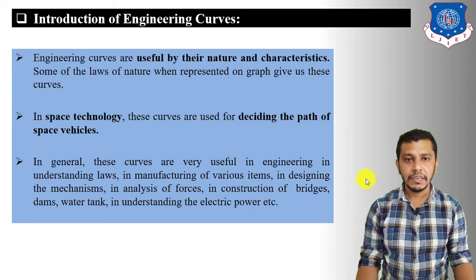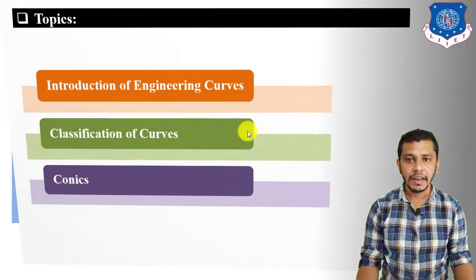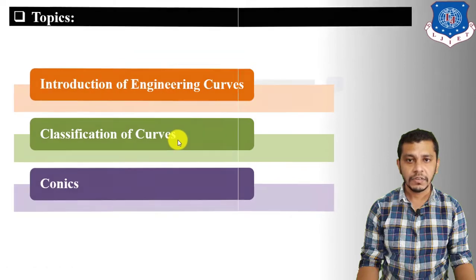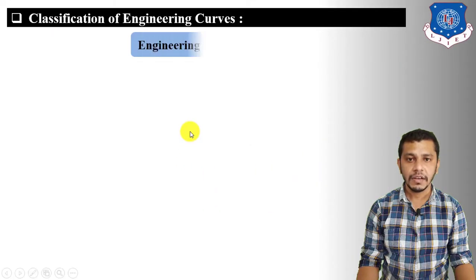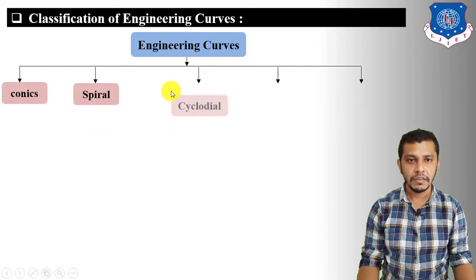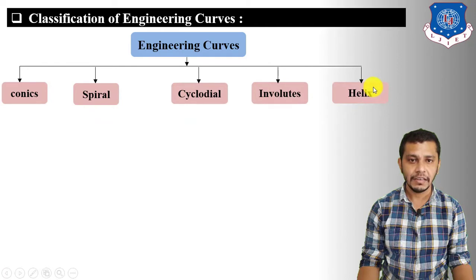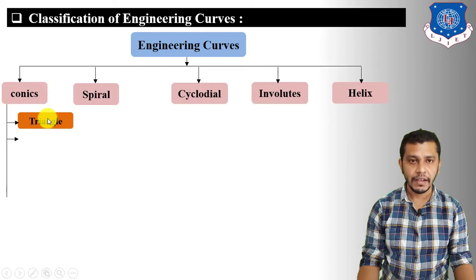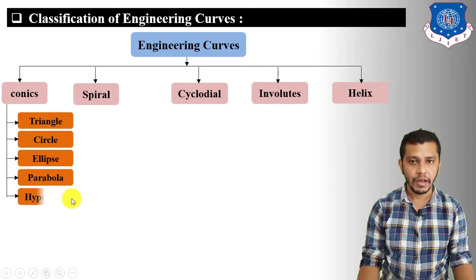Now let us see the classification of curves. Curves are classified into conics, spiral, cycloidal curves, involutes, and helix. Conics are further classified into triangle, circle, ellipse, parabola, and hyperbola.